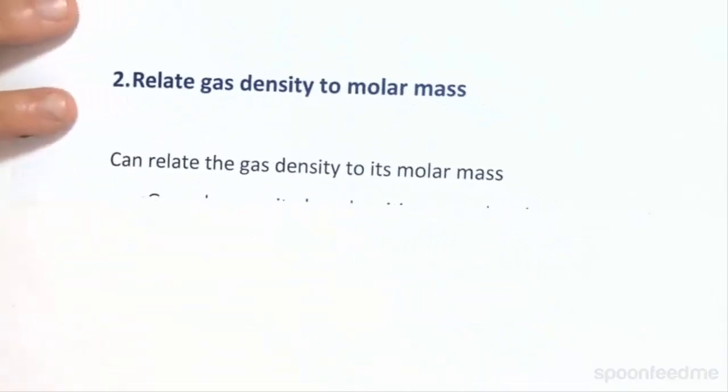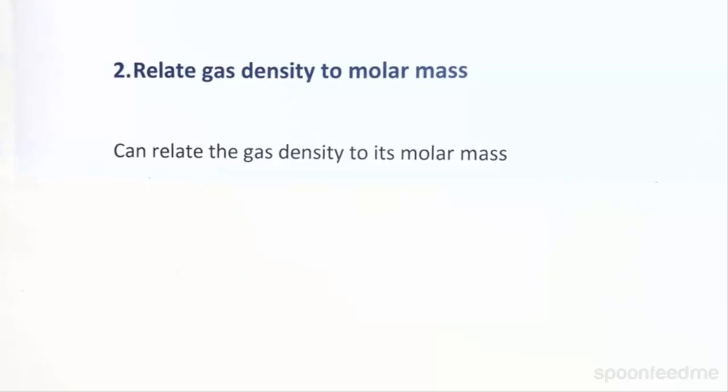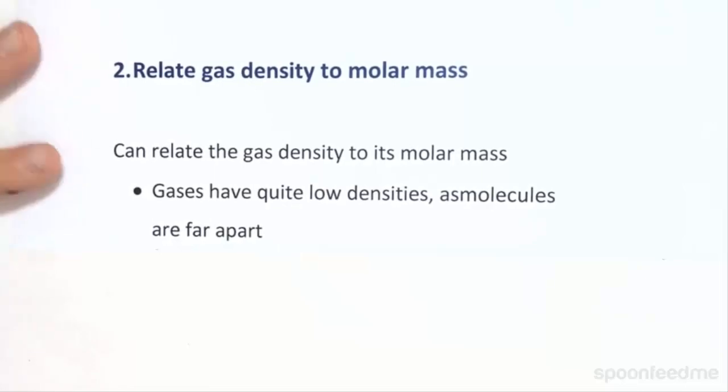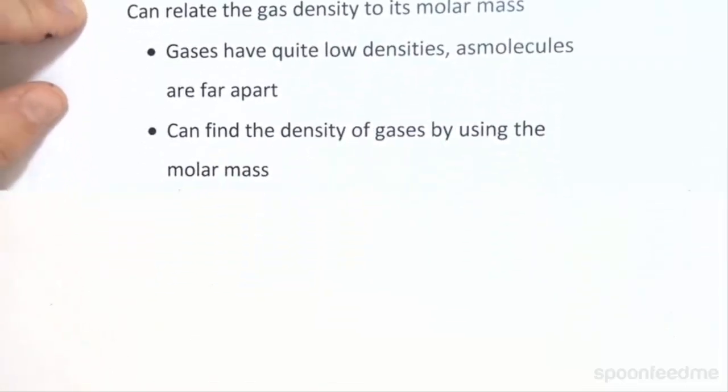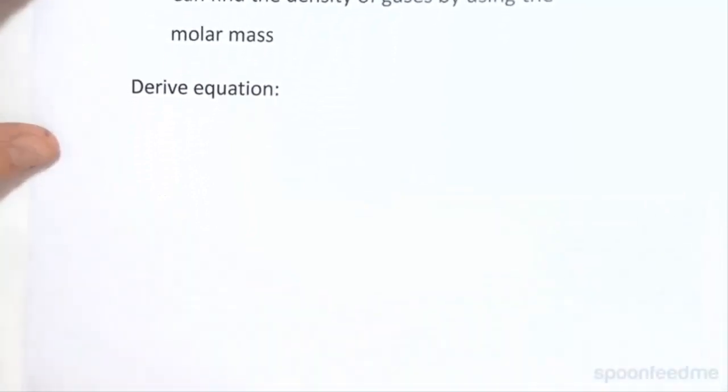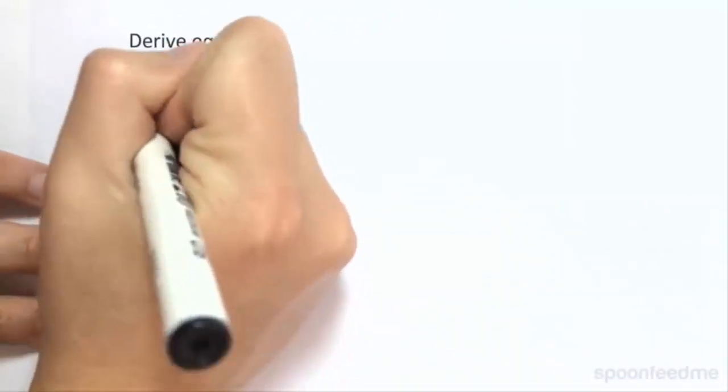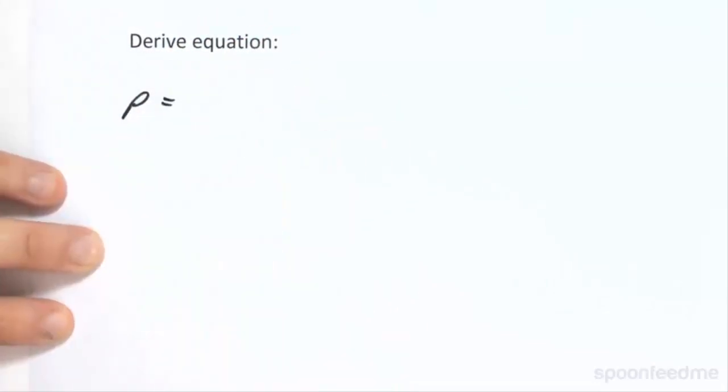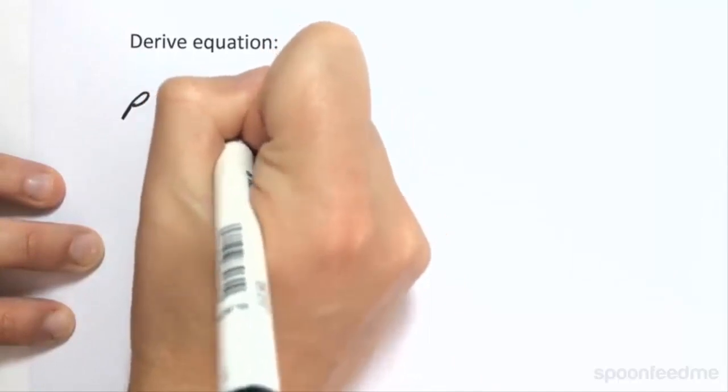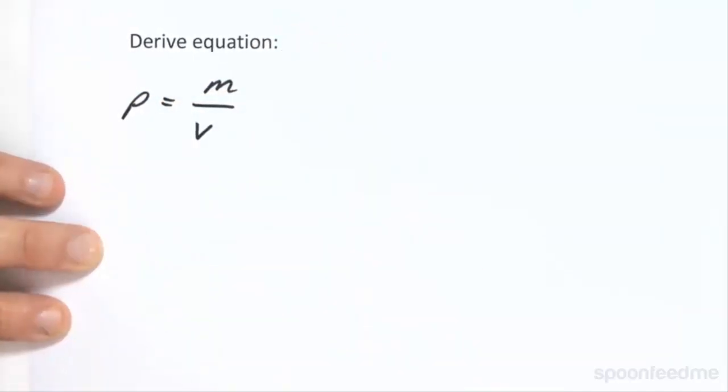So now we're going to look at the next point. So another thing to note is that we can actually relate the gas density to its molar mass. So gases have quite low densities as the molecules are far apart. We can find the density of the gases by using the molar mass. So let's work through how we would do this. Let's derive the equation for this. So we know that density is equal to the mass of an object divided by its volume.